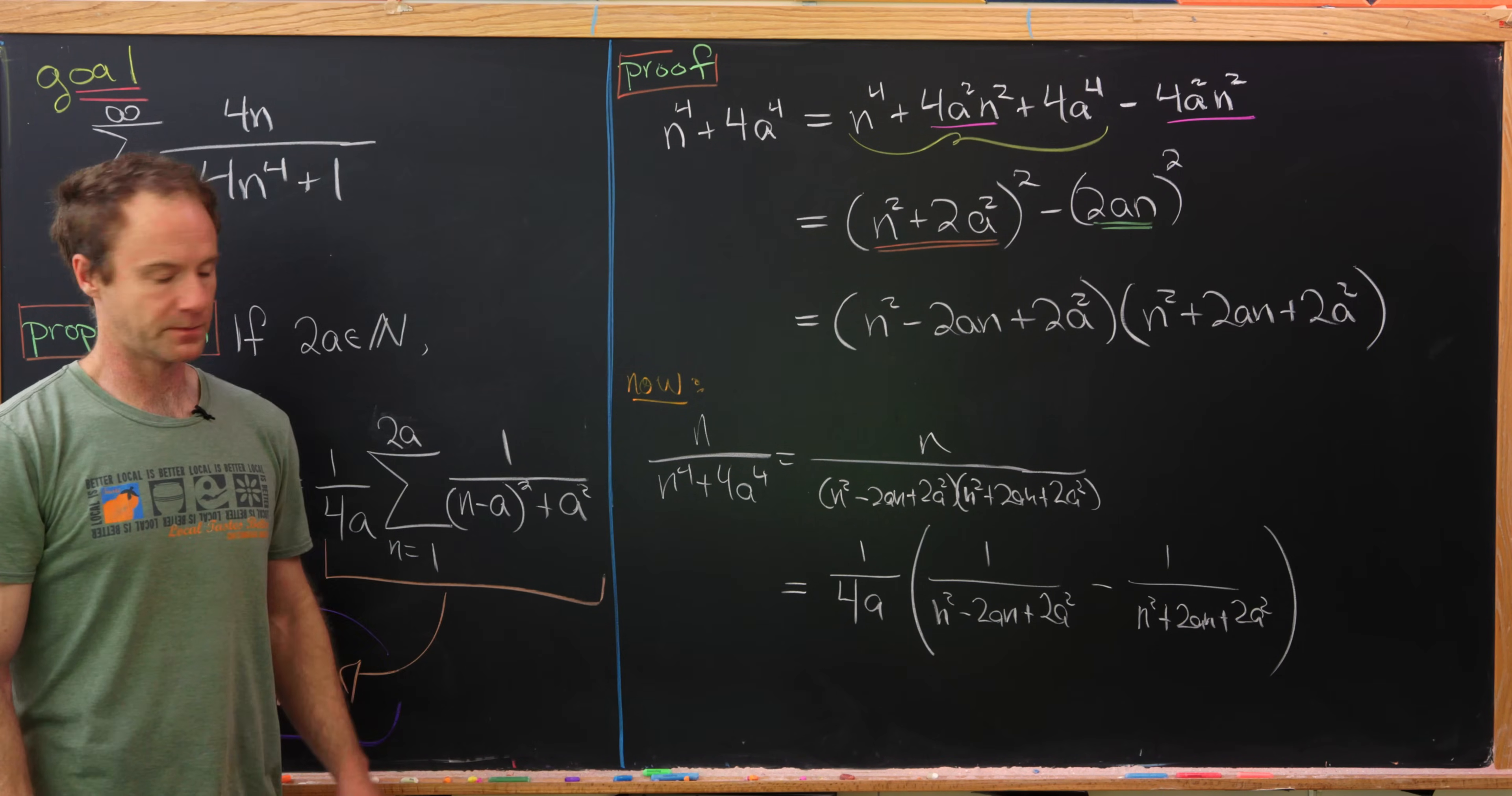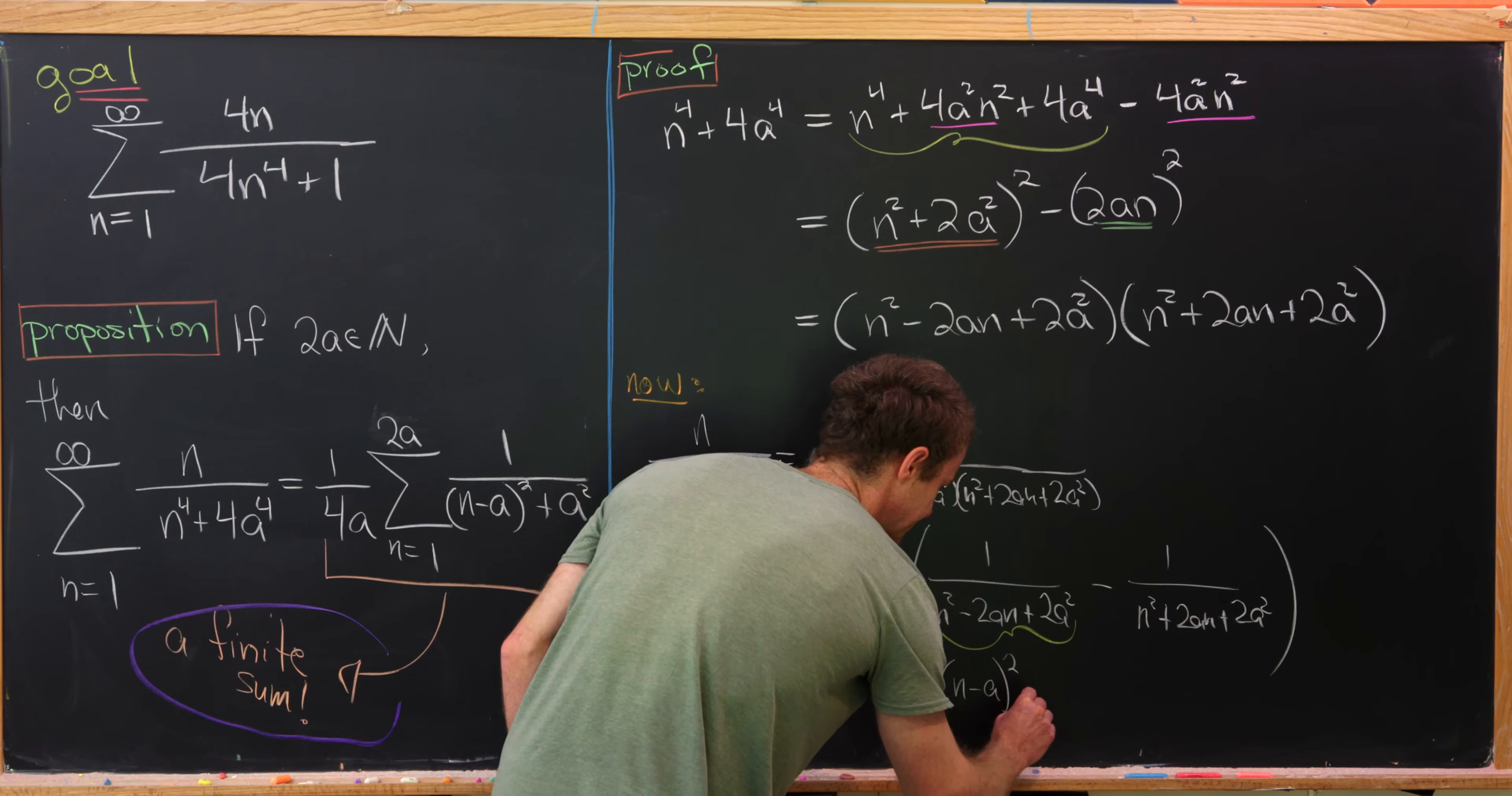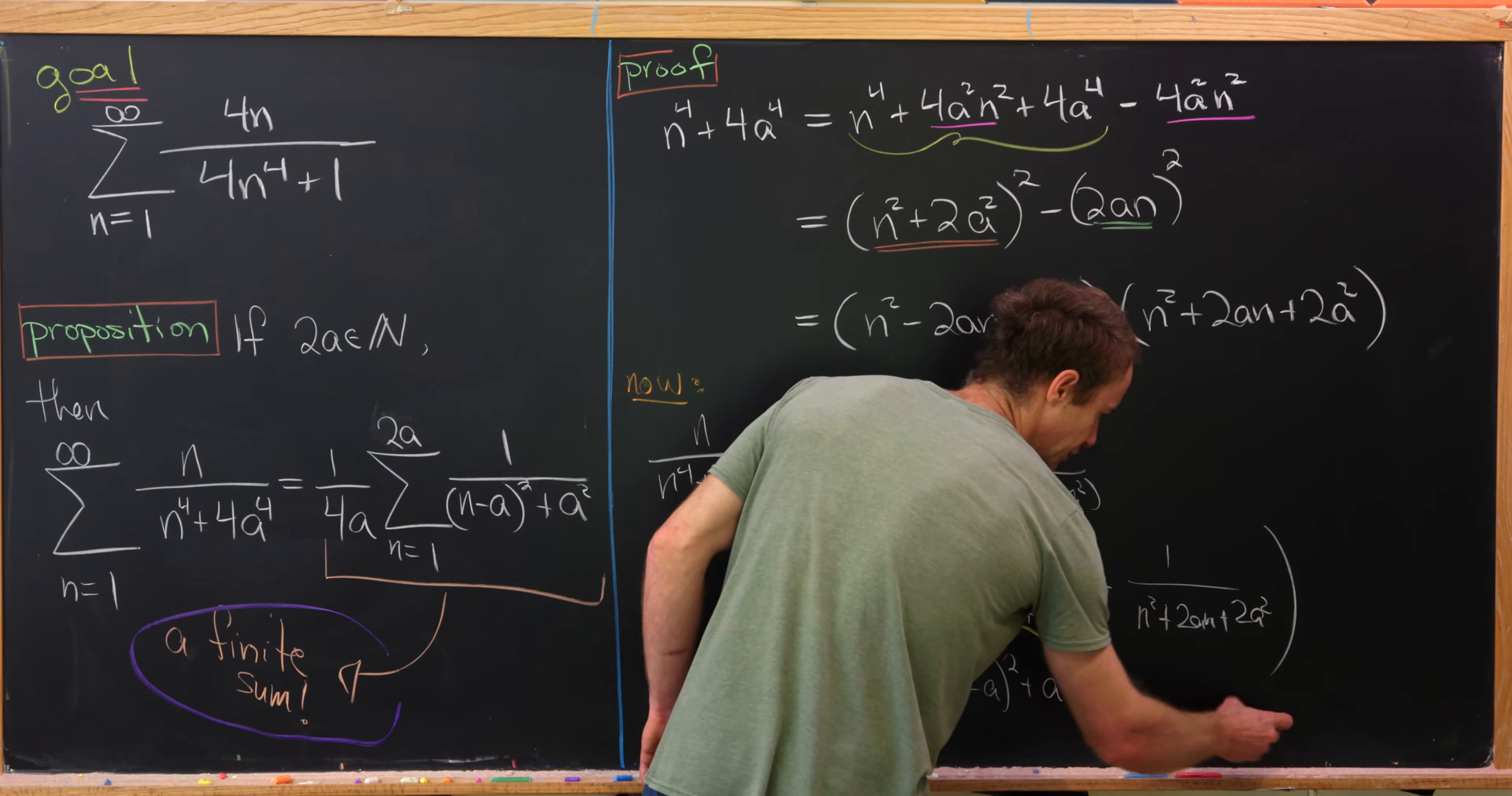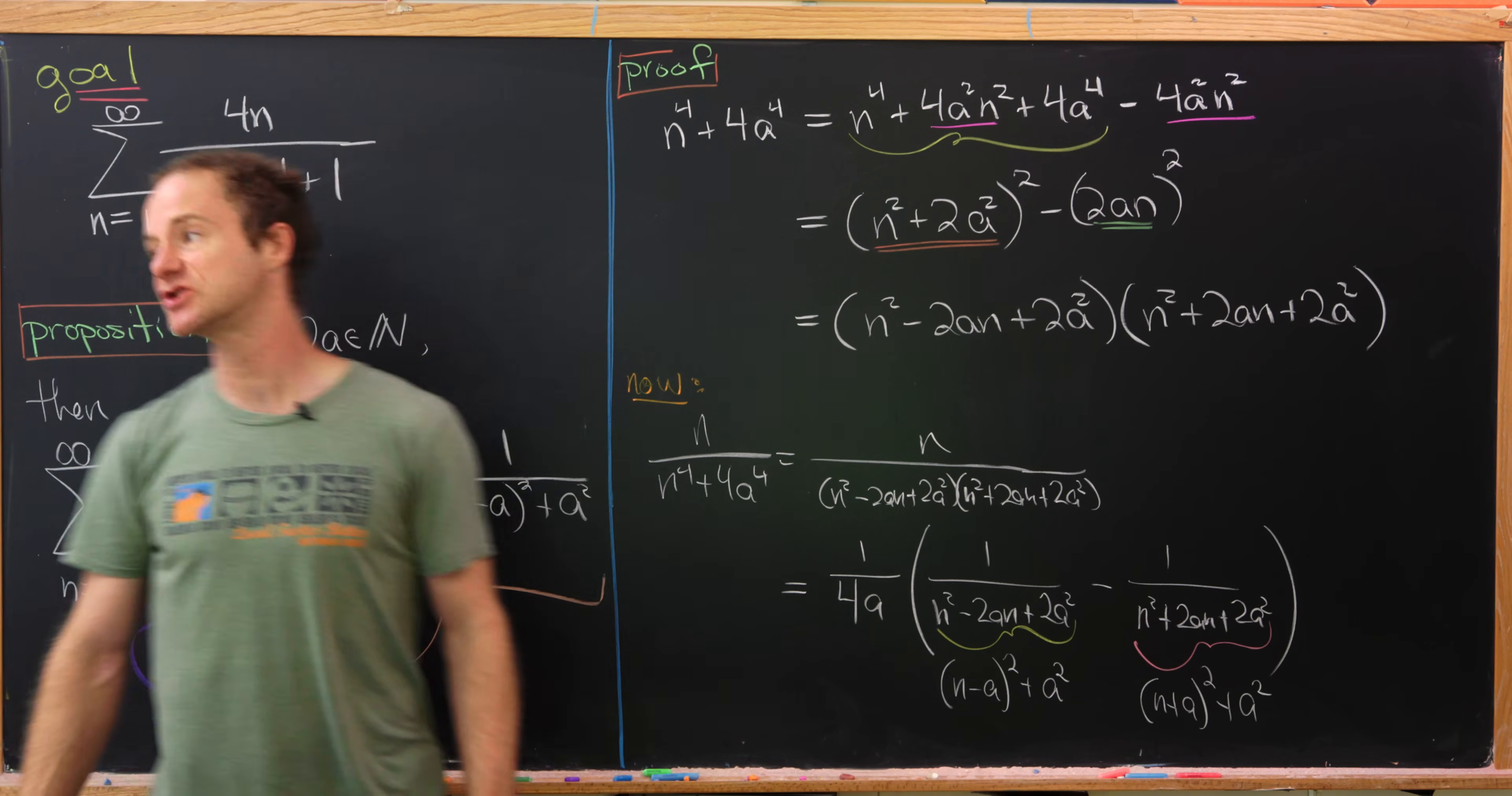So I'm going to do one more thing before we maybe bring this to the top and start our final couple of steps. So I'm going to take this term, which is underlined or underbraced in yellow, and rewrite it as follows. So this is going to be n minus a quantity squared plus a squared. So I think that's pretty clear. Notice if we multiply this out, we get n squared minus 2an plus a squared. Adding on the other a squared, we get exactly this other term here. Then I'm going to do something fairly similar over here. I'm going to write this as n plus a squared plus a squared. So now that we've got this set up, let's maybe bring all the relevant data to the top, and then we'll finish the proof of this proposition.